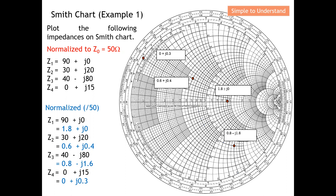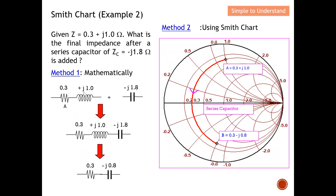Moving to example 2, I have the impedance 0.3 + j1.0. What will be the final impedance after adding a series capacitor of -j1.8? The original impedance has an inductive reactance of +j1.0, and the series capacitor contributes -j1.8. Combining these reactances gives a resultant of -j0.8, so the final impedance is 0.3 - j0.8. This is straightforward mathematically, but let's see how to do it on the Smith chart.